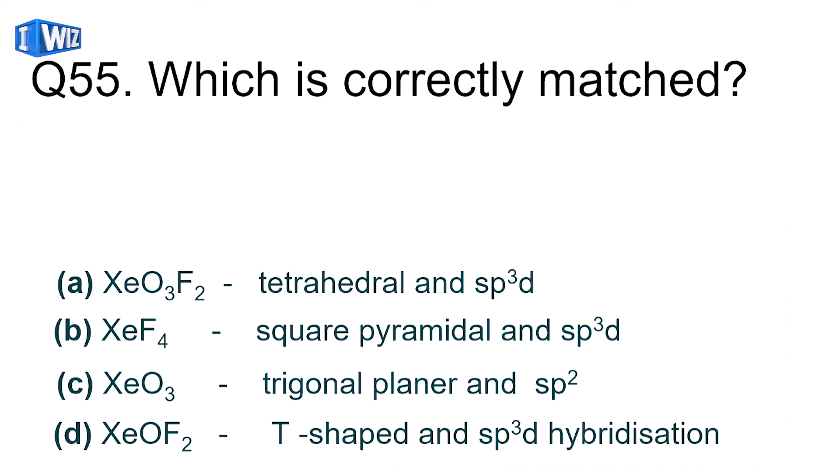The question is which is correctly matched? Options include XeO3F2 tetrahedral sp3d, XeF4 square pyramidal sp3d, XeO3 trigonal planar sp2, and XeOF2 T-shaped sp3d hybridization. For this, check that xenon has eight electrons in its valence shell. XeOF2 has two fluorines, one oxygen, and two lone pairs. It has five things attached, so it is sp3d hybridization and T-shaped. This is the correct answer.